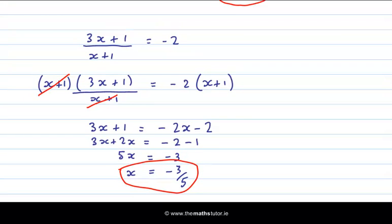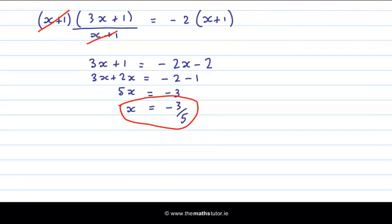So now it's always a good idea to write out your answer explicitly at the end of your question, and say our solution is x is equal to 1 and x is equal to minus 3 over 5. These are the two values of x that if we substitute them into the original modulus equation, it will satisfy it.